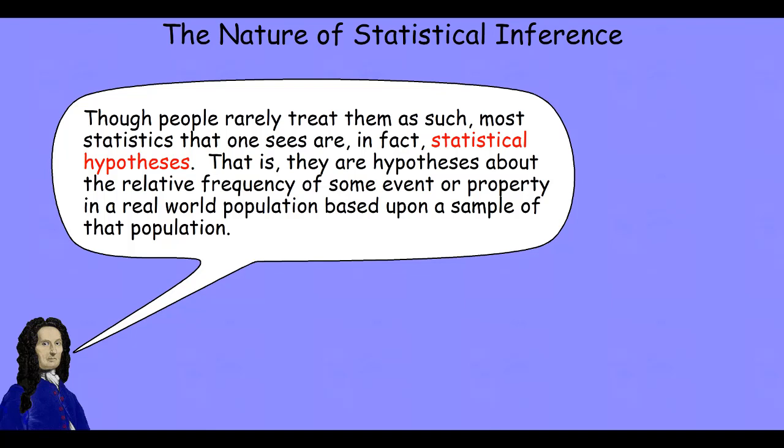In specific, they are hypotheses about the relative frequency of some event or property or relationship in the real world population that we infer from our sample. And even more specifically, they are actually a hypothesis about the range of possible values for that relative frequency within the population that cluster around the frequency in our sample, as we shall see.